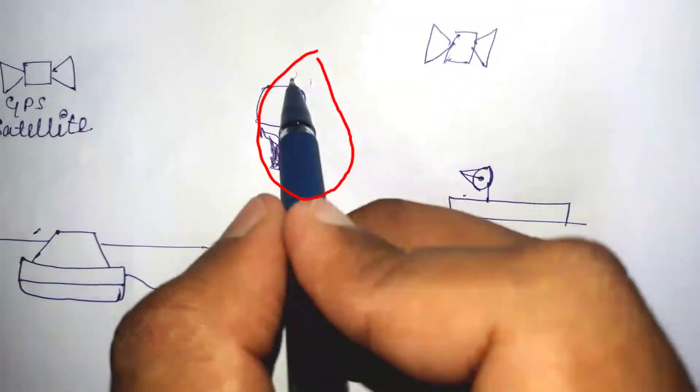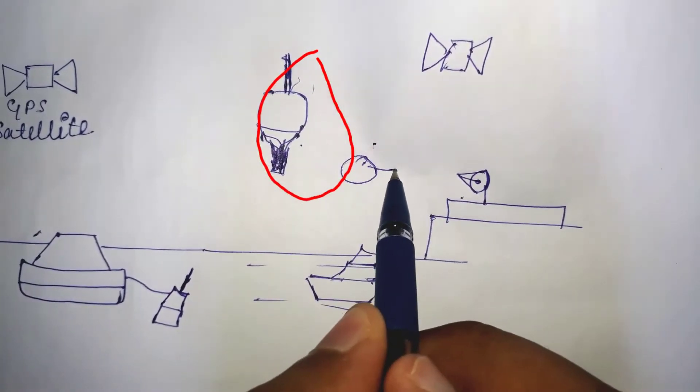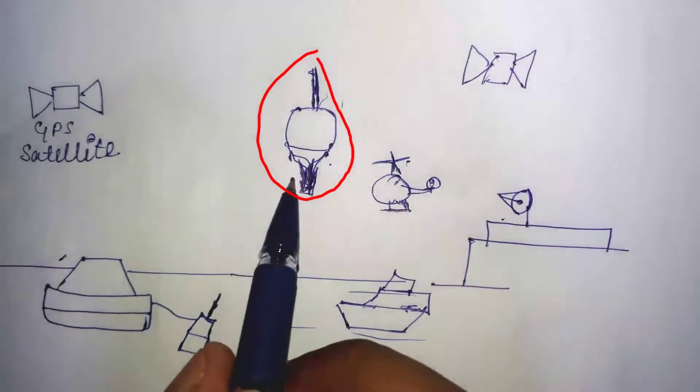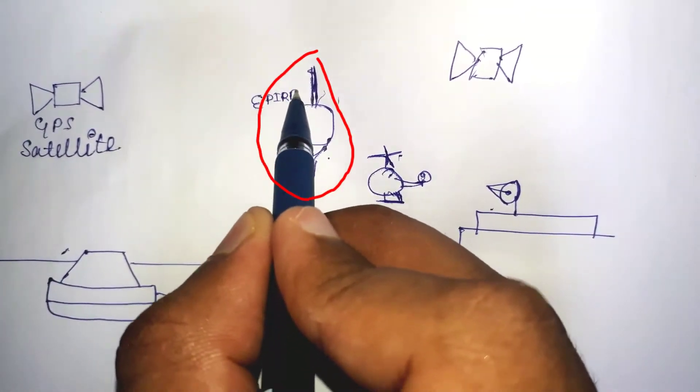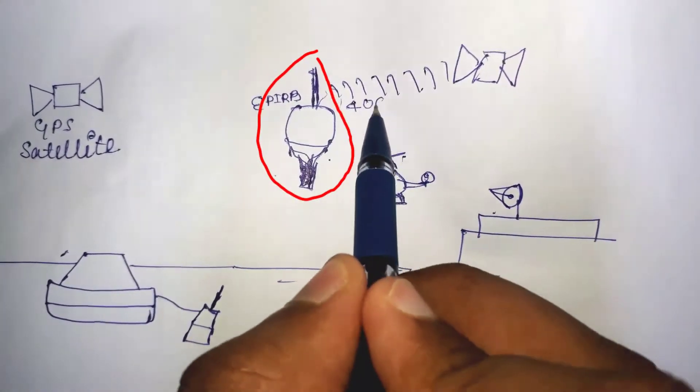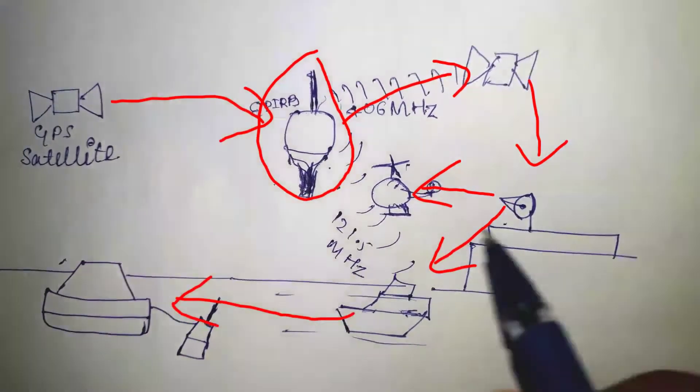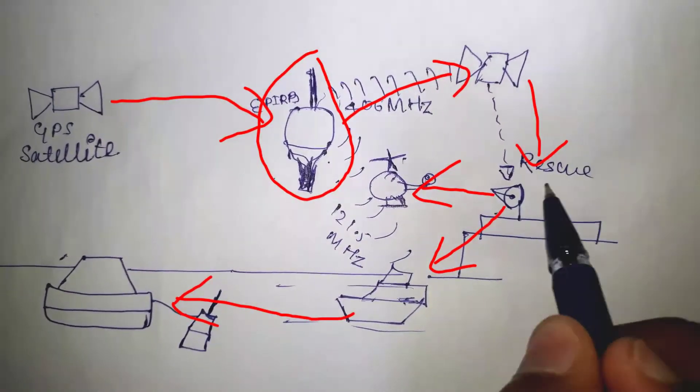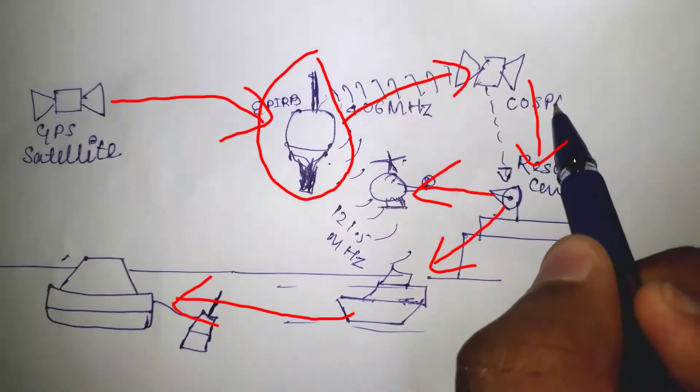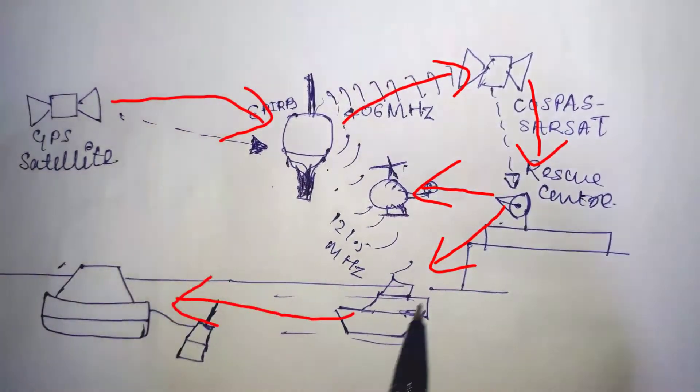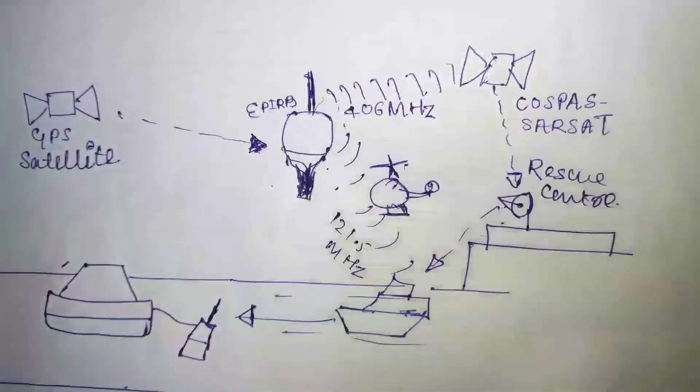When activated, it transmits a coded message on the 406 MHz distress frequency which is monitored by the COSPAS-SARSAT satellite system. The alert is then relayed via an earth station to the nearest rescue coordination center. As the satellites are in a polar orbit, they offer true global coverage. With an EPIRB, you can summon help wherever you are on the planet, no matter how remote.